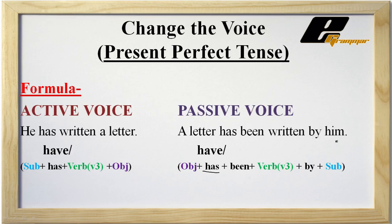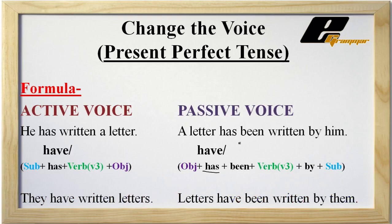Now take a look at another example where the object is plural: 'They have written letters.' In passive voice: 'Letters have been written by them.' We use 'have' here because the object 'letters' is plural.